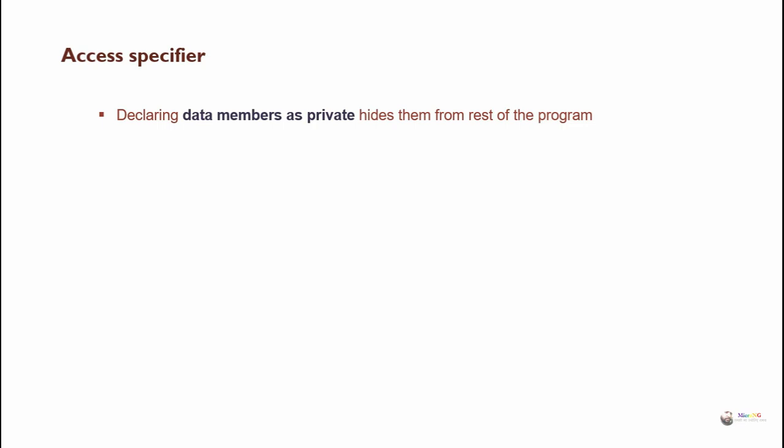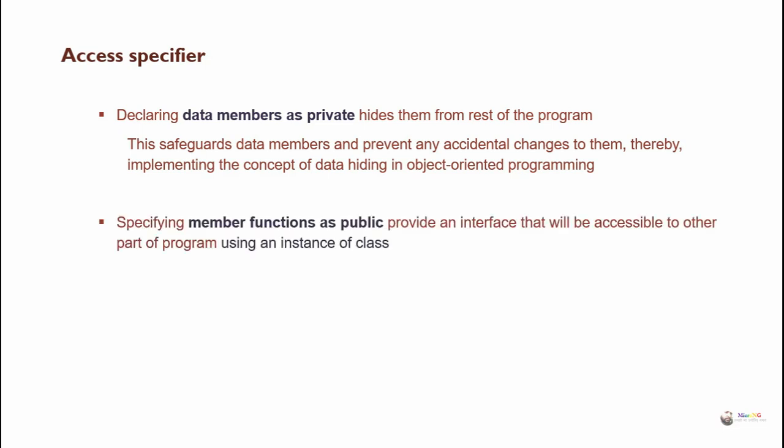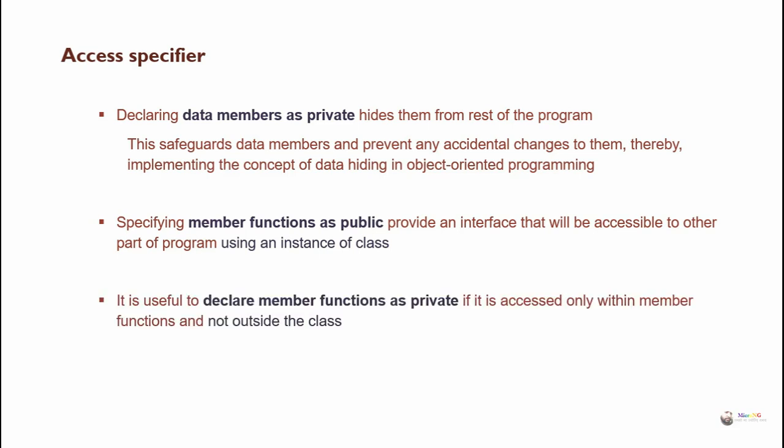Declaring data members as private hides them from the rest of the program. This safeguards data members and prevents any accidental changes to them, thereby implementing the concept of data hiding in object-oriented programming. Specifying member functions as public provides an interface that will be accessible to other parts of the program using an instance of the class. It is also useful to declare member functions as private if they are accessed only within member functions and not outside the class.